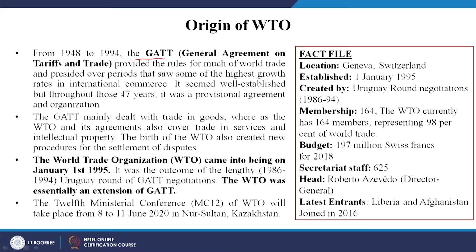How did the WTO originate? It originated from the GATT — the General Agreement on Tariff and Trade — which ran from 1948 to 1994 and provided rules for much of world trade. It was a provisional agreement and organization. The GATT mainly dealt with trade in goods, not services. The WTO and its agreements also cover trade in services and intellectual property. The birth of the WTO also created new procedures for the settlement of disputes.